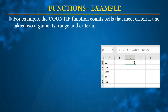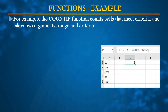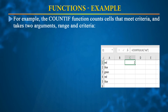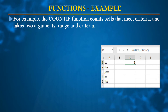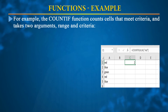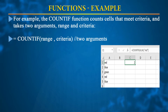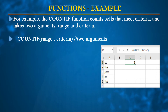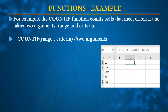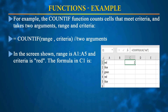There may be situations where you want to count based on a condition. For example, if a column contains colors — red, green, blue, red, red — and you want to know how many times red appears, you use the COUNTIF function. The format is =COUNTIF(range, criteria), where you select the range of cells to search and pass the condition as a parameter.